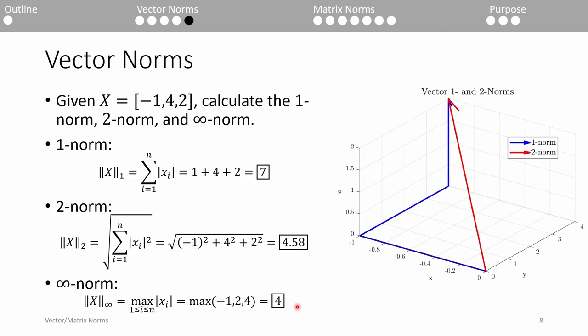On the right, I drew the graphical representations of the 1-norm and 2-norm. The 1-norm can be thought of the total distance spanned by the vector. Starting from the origin, we move 1 unit in the negative x direction,